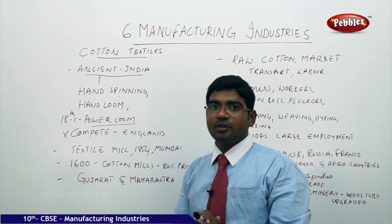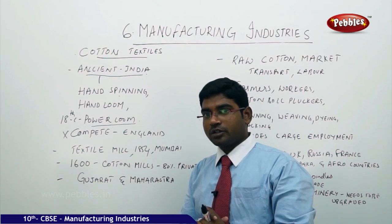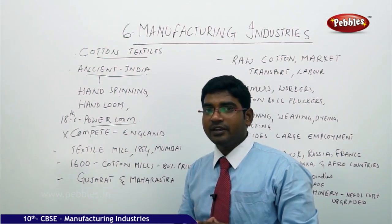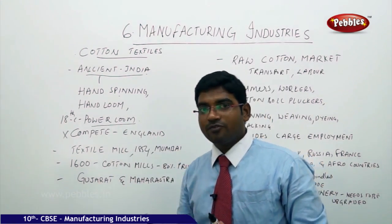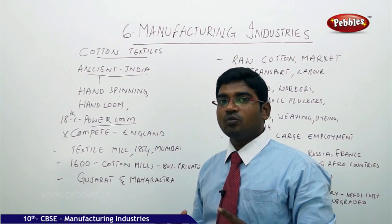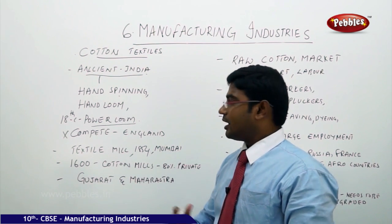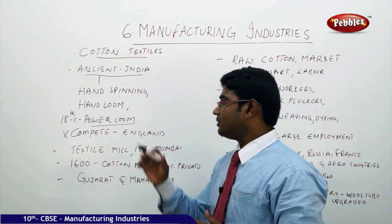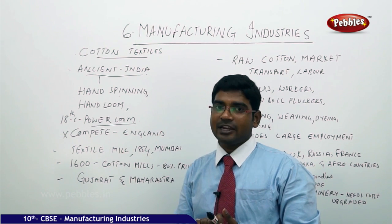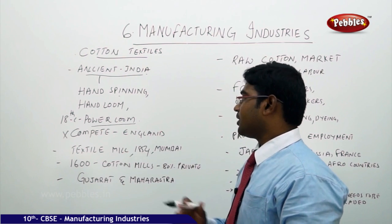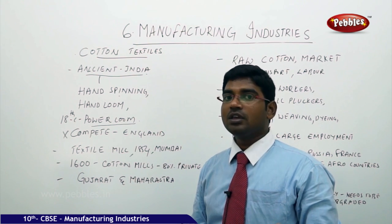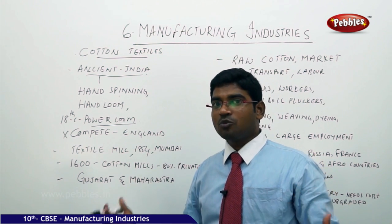They started to face stiff competition during the colonial period from England's mill-produced cotton, because mill production was very large in scale. People working in India used to produce everything within their own efforts at very low cost, but machines could produce in bulk amounts. We could not face the competition, and it became a big setback for Indian cotton, despite Indians having good capacity and skill to make fine quality cotton.